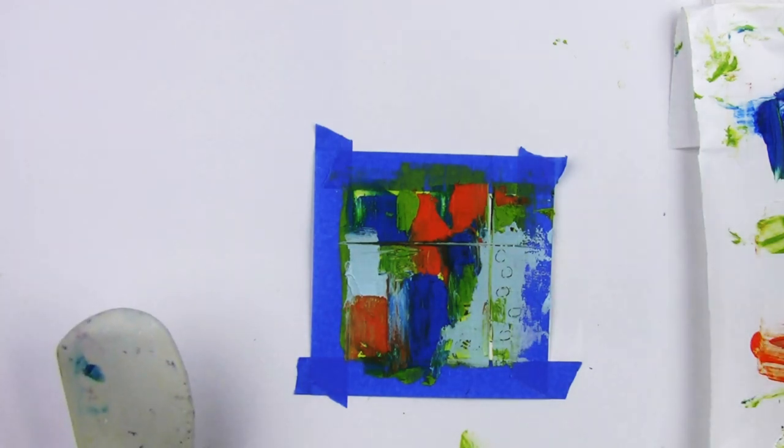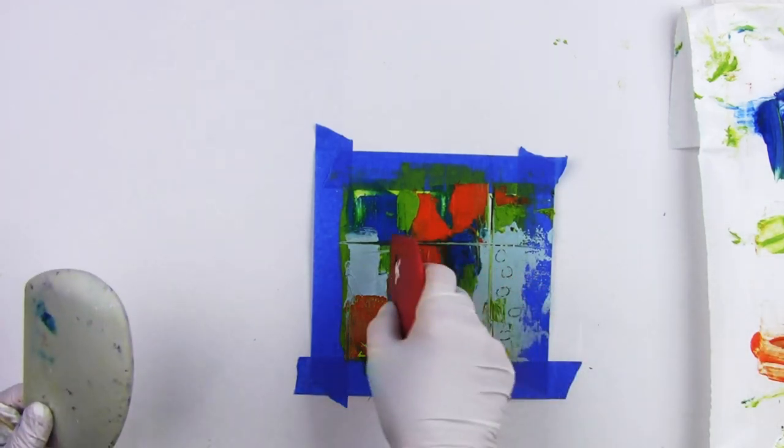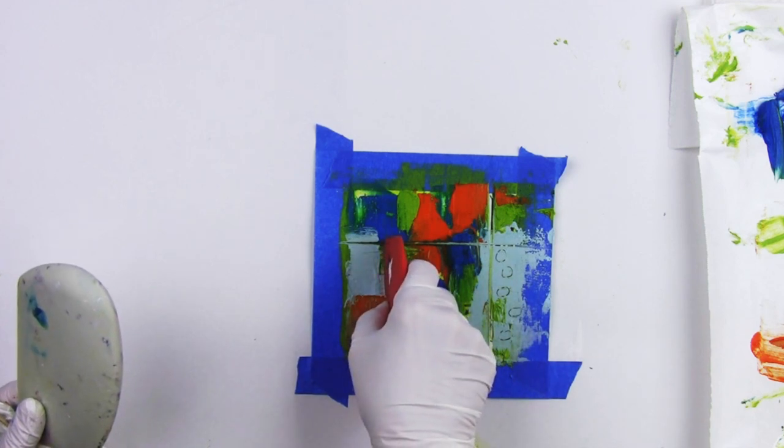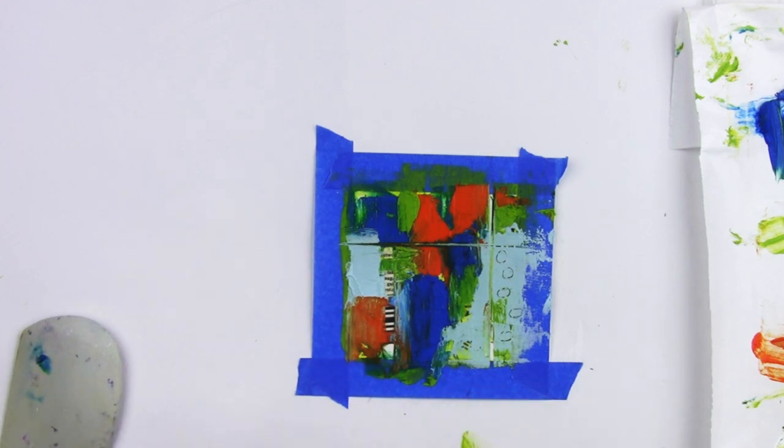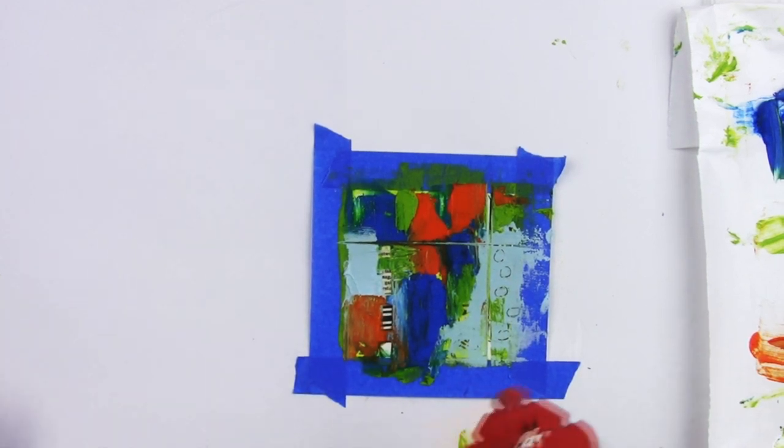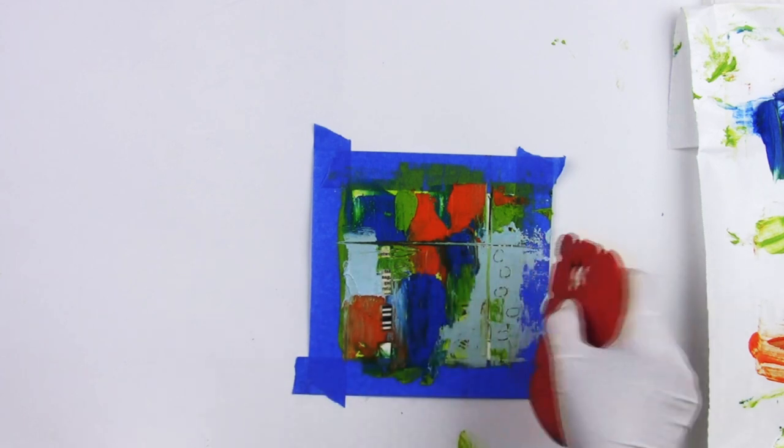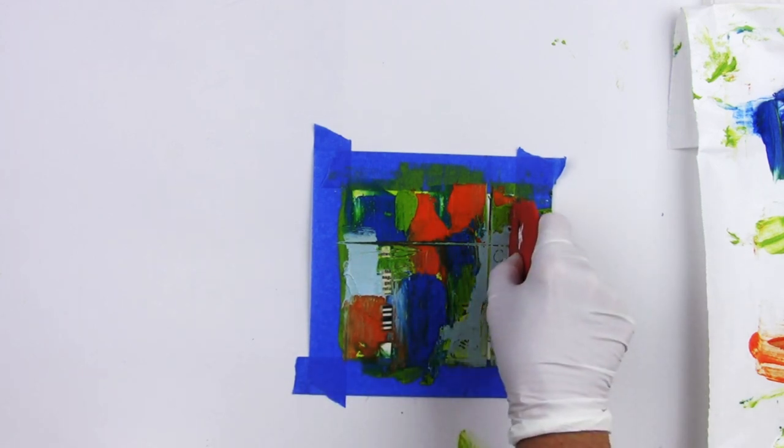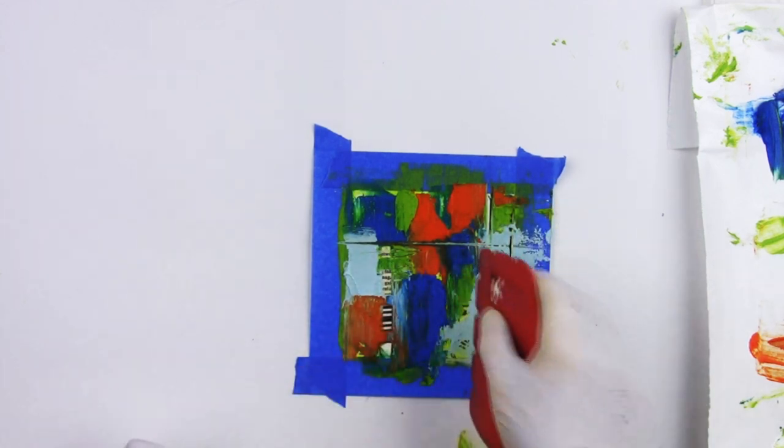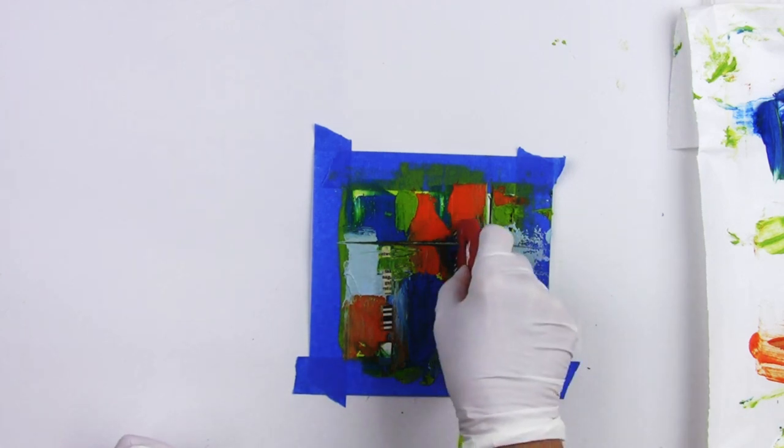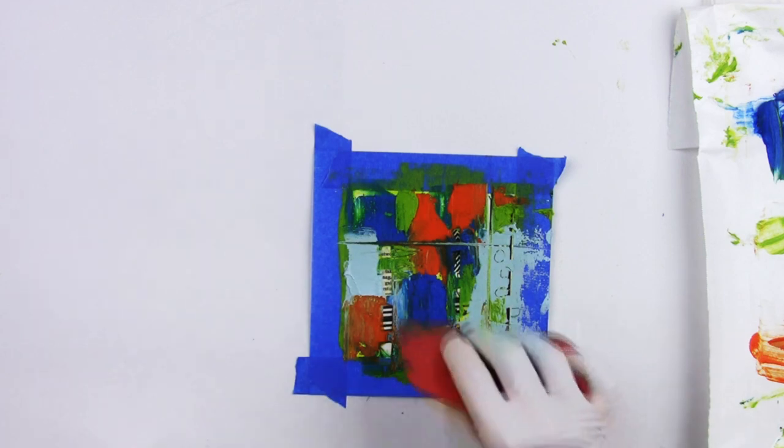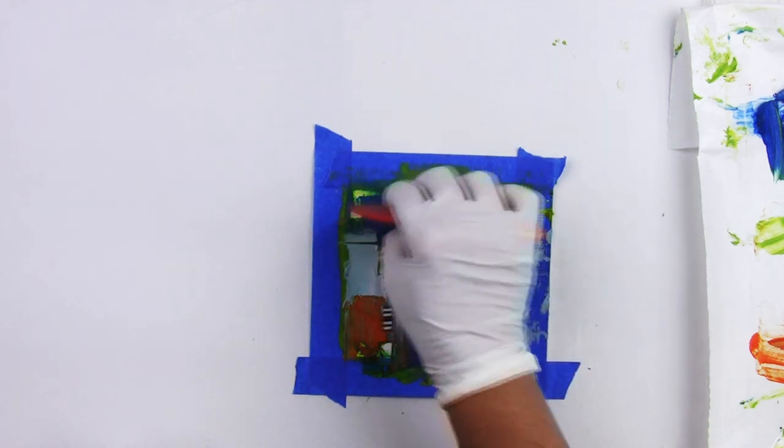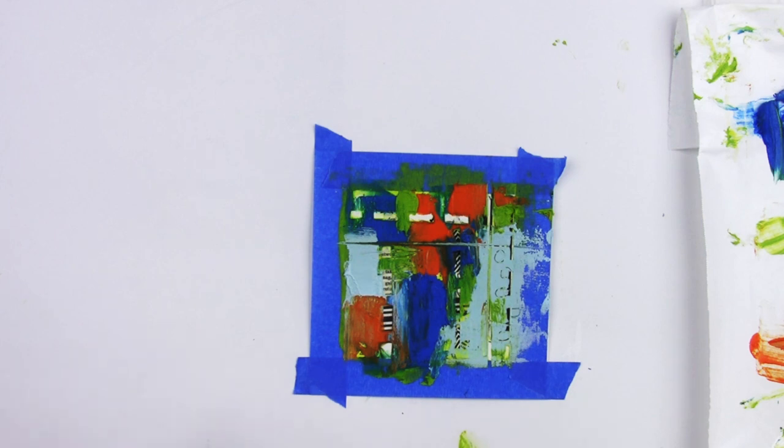I'll use one of these other tools, a catalyst tool, and maybe scrape some big pieces in there. That's kind of cool that it's revealing some of the black from underneath.